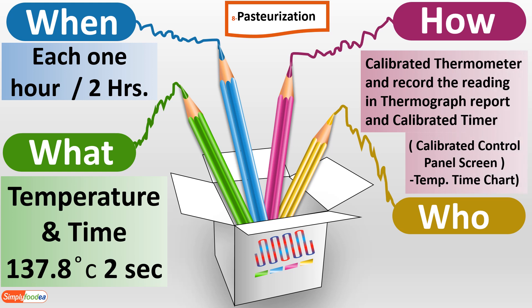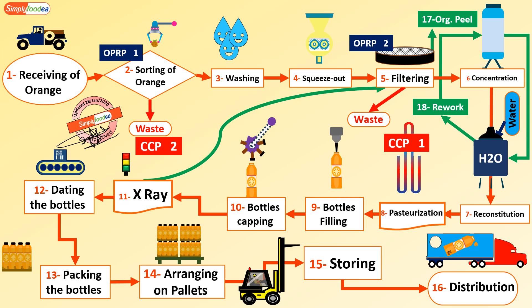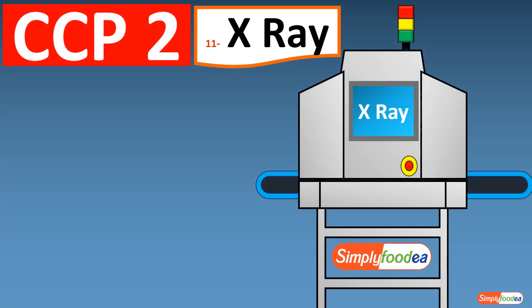How we will monitor: by calibrated tools — any tool used in detecting a CCP must be calibrated, either a calibrated thermometer or a calibrated control panel screen. We must report all readings in the thermograph report or any documentation about detecting CCP temperature and time. Any device must be included in the calibration plan in the factory. Who will monitor: the production labor each one hour, or the quality inspector each two hours.